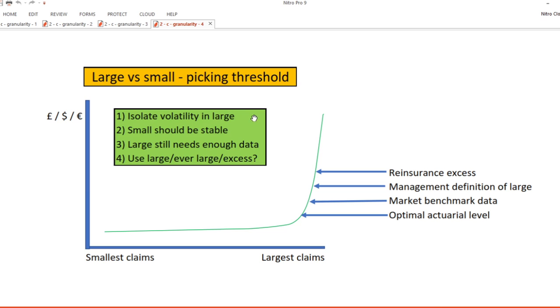Principle number one when deciding what threshold to use is that you are trying to isolate the volatility in the large triangle. Principle number two is that you want to have a stable triangle of small claims development. Principle number three is that you want to have enough data from the large triangle to make it possible to model it. We're remembering the scarcity side of the balance equation here. The nuance to consider is whether to define claims as large, ever large, or excess, and we'll talk about that in a minute.